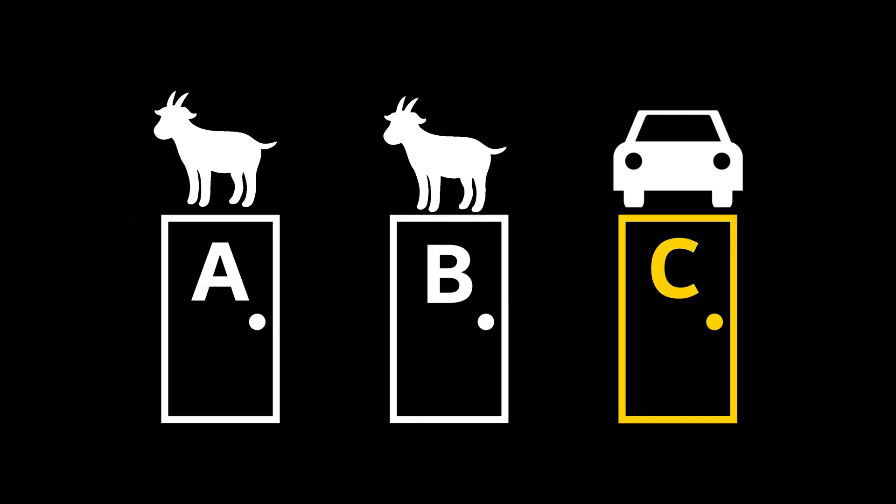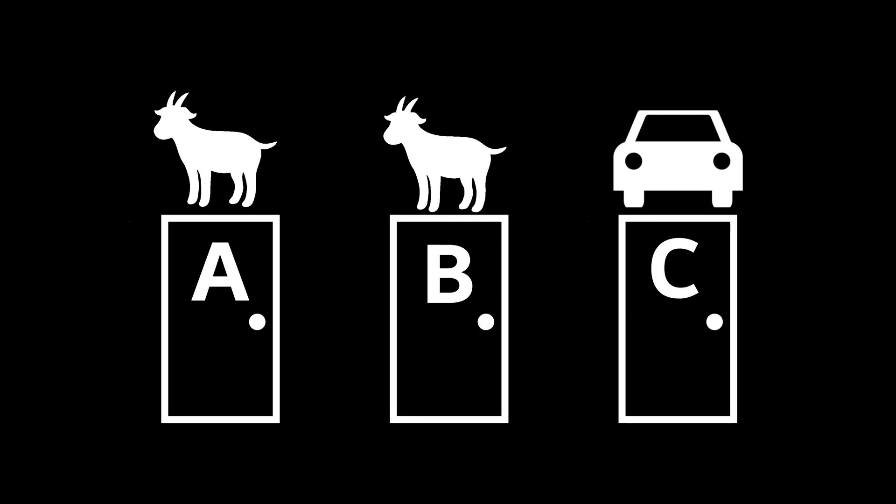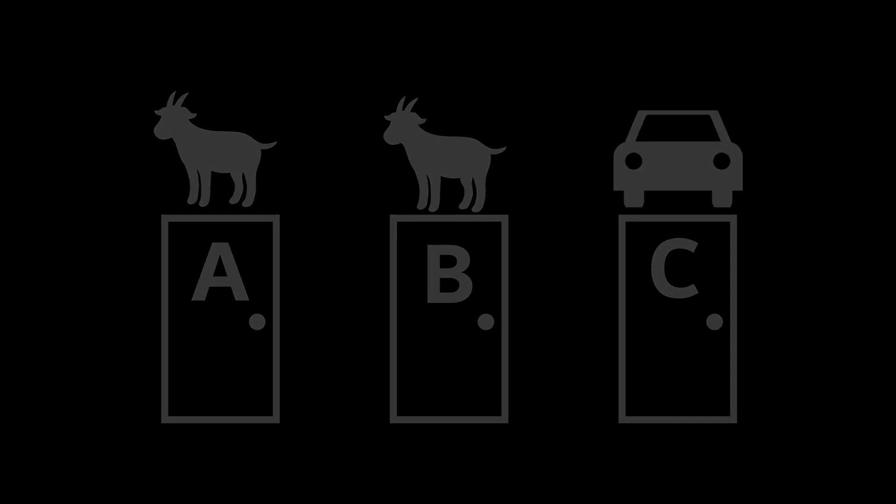If you initially choose the car, which will happen one third of the time, then switching will mean getting the goat. Since you'll probably choose the goat the first time around, you should switch doors.